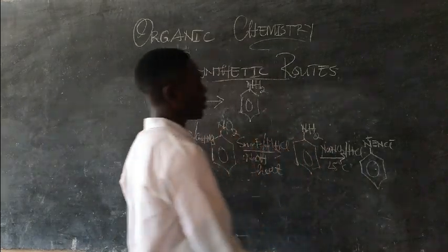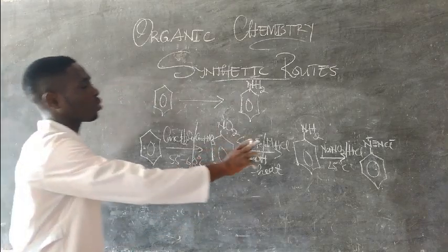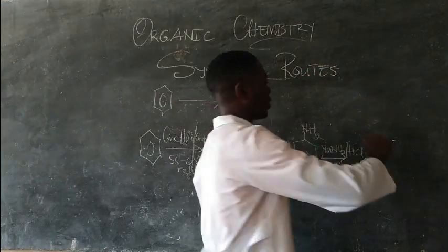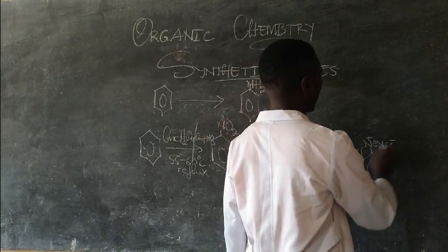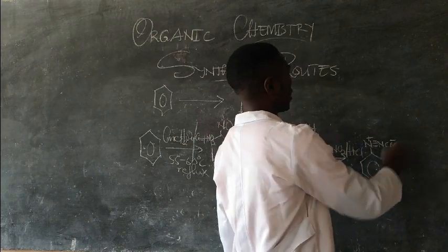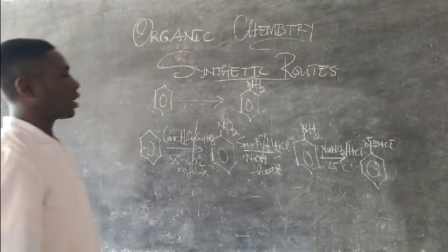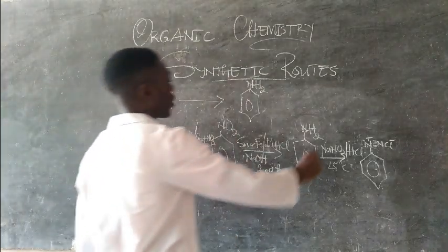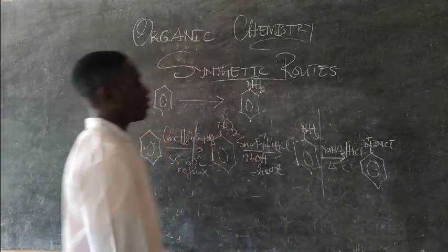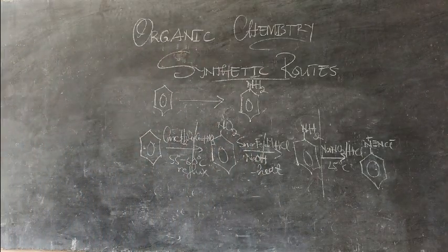This benzene diazonium salt is very important because from it you can convert to various compounds — you can replace the diazonium group with a cyanide, or with a bromide, using different reagents and reaction conditions.